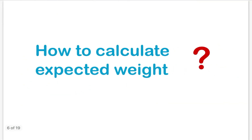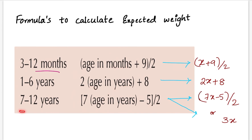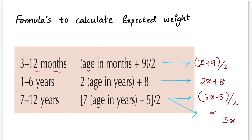Now we will learn how to calculate expected weight in a child. During the first 3 months, normal weight gain is 20 to 30 grams per day. From 3 months to 12 months, expected weight (in kg) is calculated by the formula (x + 9) / 2, where x is age in months. For age 1 to 6 years, the formula is 2x + 8, where x is age in years. For age 7 to 12 years, the formula is (7x − 5) / 2, or simply 3x — multiply the age by 3 to get the expected weight.